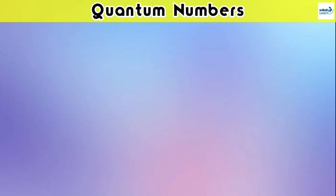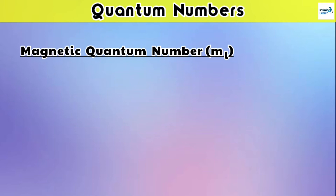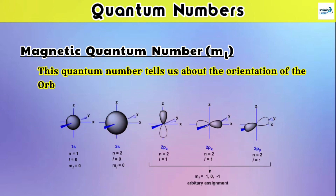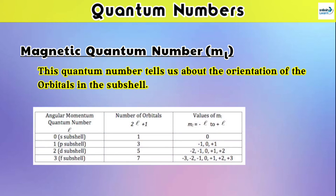Now let's move to the next quantum number, which is the magnetic quantum number. This quantum number tells us about the orientation of the orbitals in the subshell — that is, the possible orientations of the orbitals. The magnetic quantum number has integral values ranging from −l to +l, including zero. There is a formula, 2l + 1, through which we can find the number of orbitals in a subshell.